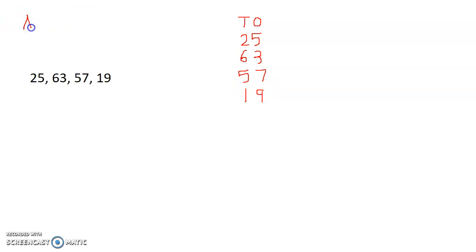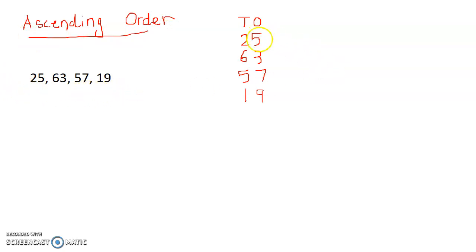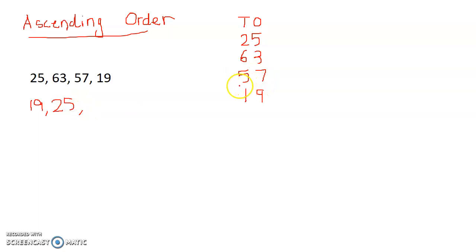We are arranging the numbers in ascending order — smallest to biggest. The digits in the tens place are 2, 6, 5, and 1. The smallest is 19. So we start with 19, next is 25, then after 25 the next number in the list is 57, and then 63.